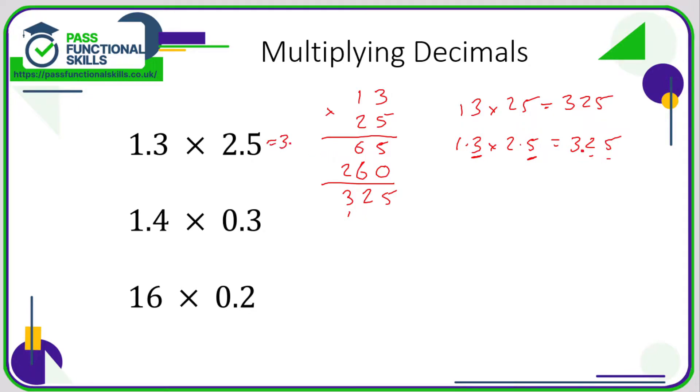So 1.4 times 0.3. I'm going to work out 14 times 3. 14 times 3 is 42. So if 14 multiplied by 3 is 42, then 1.4 times 0.3... in the question we have two decimal places, so we need two decimal places in our answer.